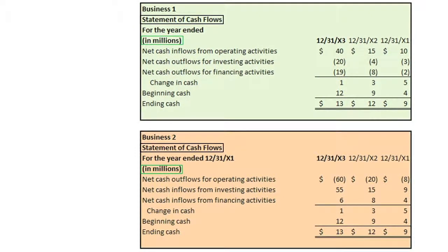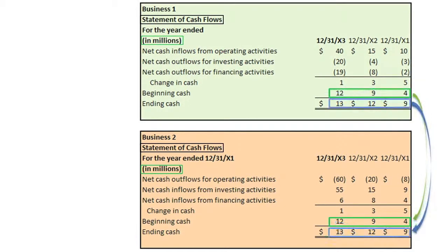You should first note that both businesses have exactly the same beginning and ending cash balances for each of the three years. They both started with cash balances of $4 million at the beginning of year X1 and ended year X3 with $13 million, for a $9 million increase in cash.